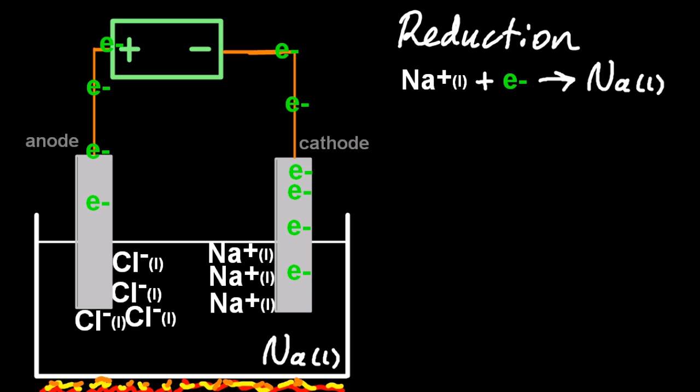And this liquid sodium now sinks to the bottom of the container where it can be collected. Two of the chloride ions attracted to the anode are then going to have their electrons ripped off. After all, the anode is positive. It's going to attract the electrons off of the chloride, leaving behind diatomic chlorine. The IB like to ask, what do you see? You don't see chlorine. You see a green gas being evolved.